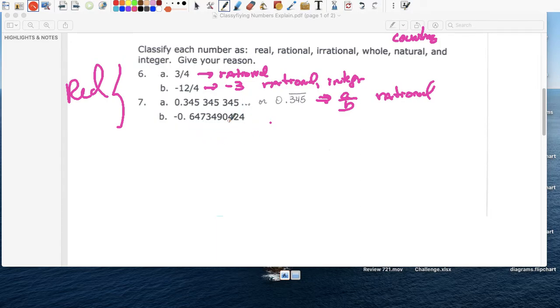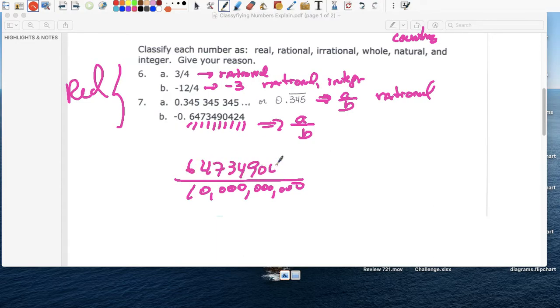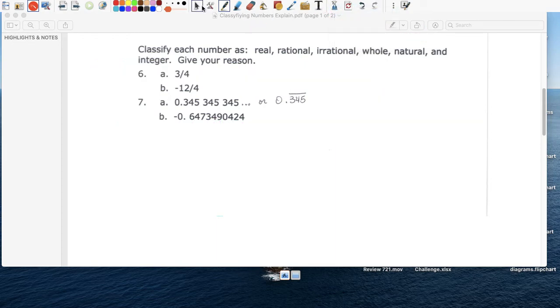The last one here, this is a terminating decimal. I can write that as a ratio of two integers, I can write that A over B. So this would be ten, a hundred, a thousand, ten thousand, a hundred thousand, a million, ten million, a hundred million, one billion, ten billion, so the place value is ten billion. Over six, four, seven, three, four, nine, zero, four, two, four. So I can write this, negative, as a ratio of two integers. It's not a decimal that goes on forever, right? It's a terminating decimal. We can actually find the last place value of the last digit.